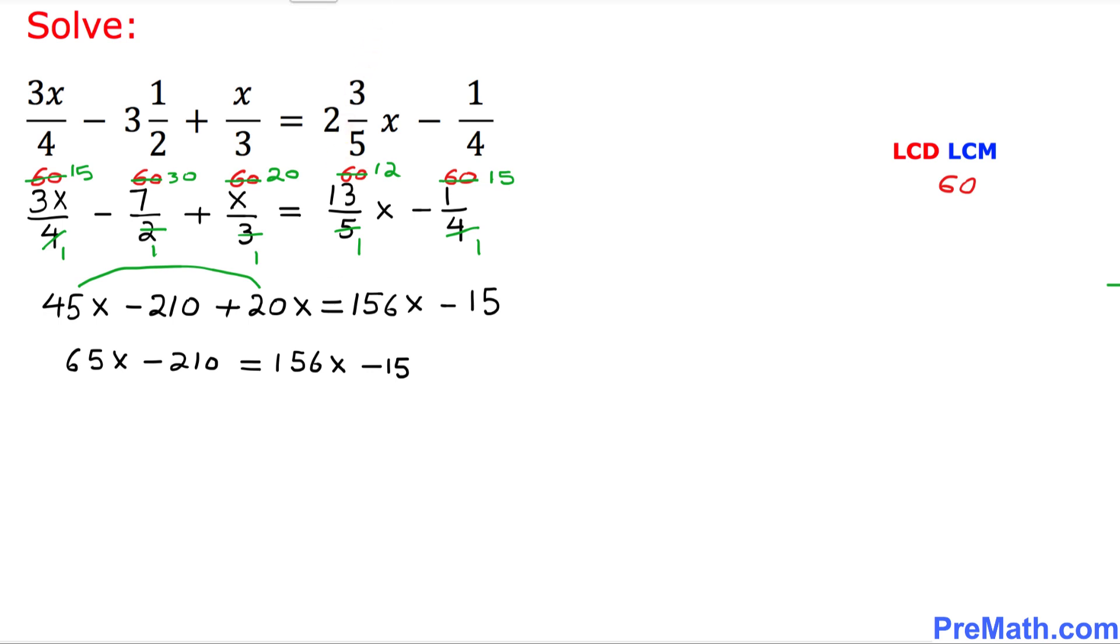And now here we are going to move this 156x, and at the same time I'm going to move this negative 210 on the right hand side simultaneously. So this is going to become 65x minus 156x equals negative 15 plus 210.